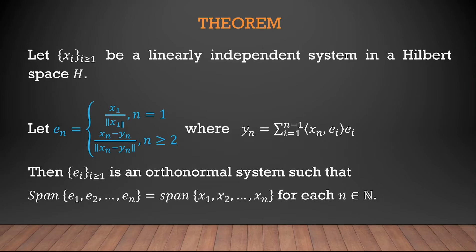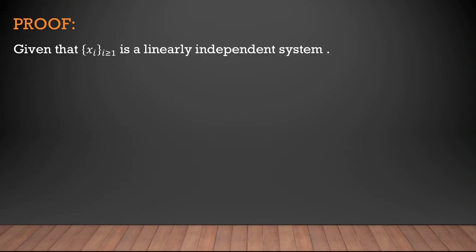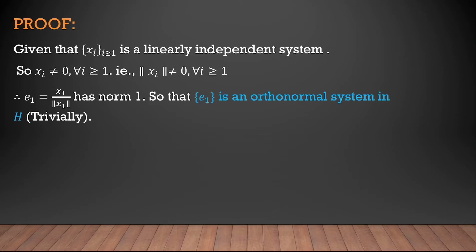We will use mathematical induction to prove the theorem. First, we take a single vector x_1. Since {x_i}, i ≥ 1, is a linearly independent system, there is no zero vector in it, so x_i ≠ 0 for all i ≥ 1, which means ‖x_i‖ ≠ 0 for all i ≥ 1.